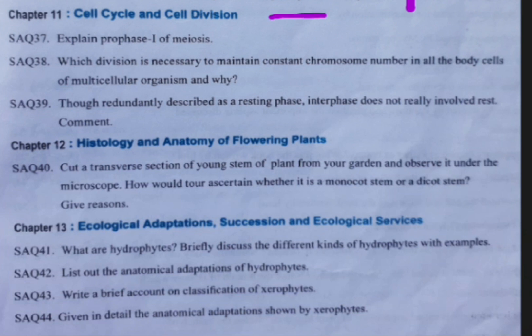Coming to the 11th chapter: from this, one and only short answer is coming — no essays. Only one short answer. For this you have to prepare meiosis prophase one. How many stages? Five stages: leptotene, zygotene, pachytene, diplotene, and diakinesis. These five stages you should prepare.